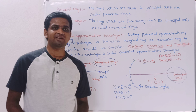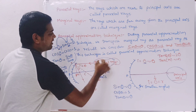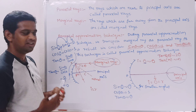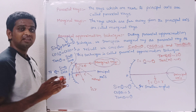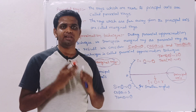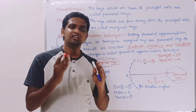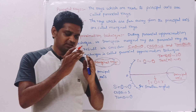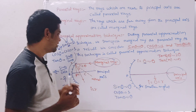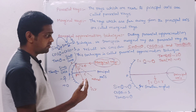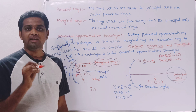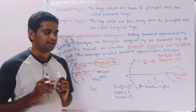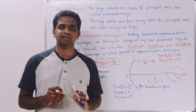Now the question is: why do we transpose the marginal ray as a paraxial ray? The answer is that the aperture of the spherical surface is very, very small. The reflecting portion of the spherical mirror is considered as the aperture, and this aperture is very small. Because of the small aperture of the spherical mirror, we consider the marginal rays as paraxial rays.